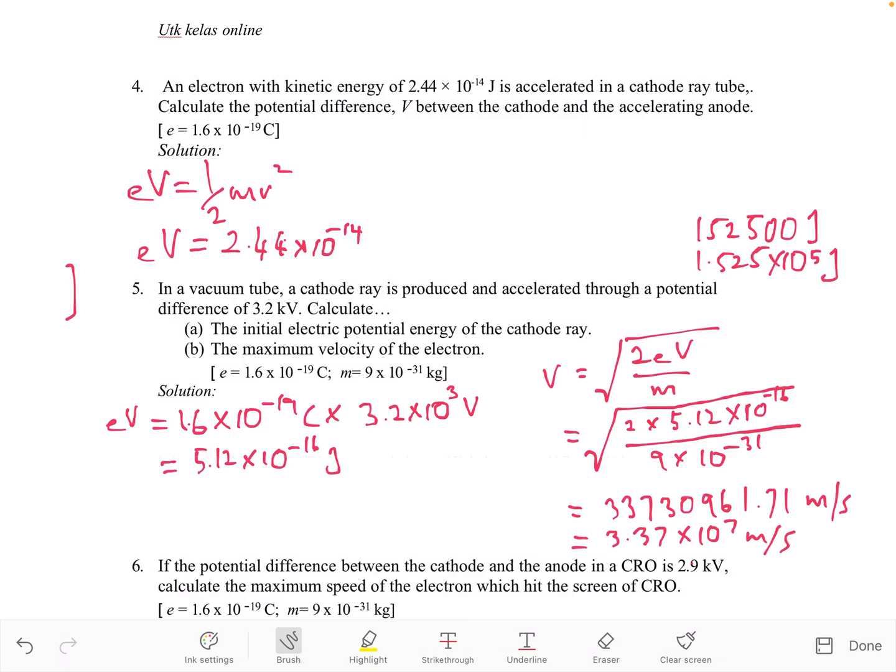From here, you want to find what is V. So V equals 2.44 times 10 to the power of negative 14 divided by e. E is this value, so you can write 1.6 times 10 to the power of negative 19. Use your calculator and you should get this answer.